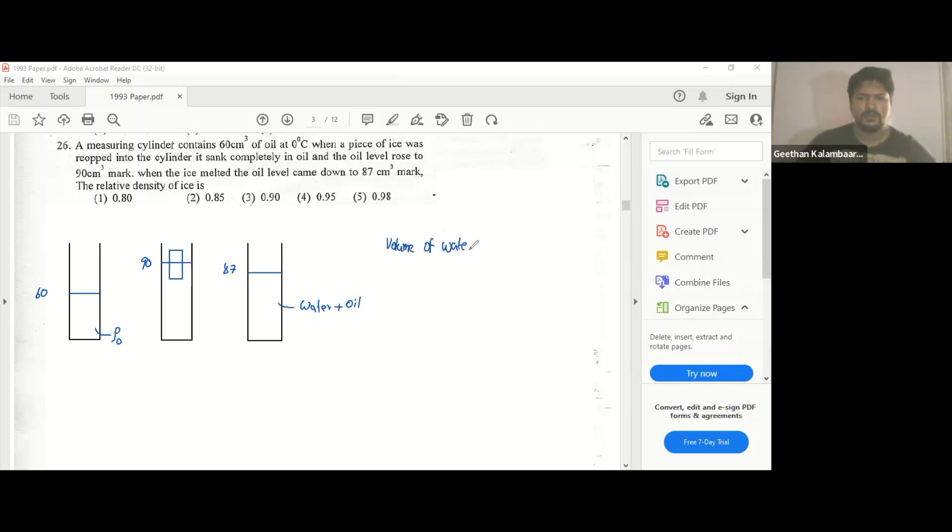Volume of water, as you know, that's 87 minus 60, so it's 27 cubic centimeters of water, that's what you get.